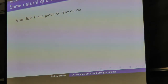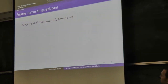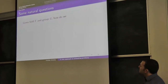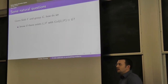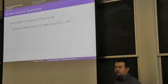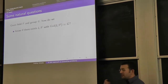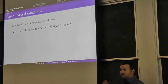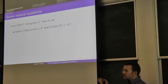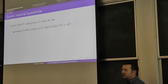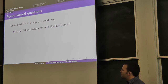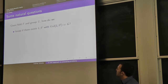There are a lot of very natural questions you can ask once you have the basics of Galois theory. First: given a field F and group G, can you find an extension of F whose Galois group is G? This is called the inverse Galois problem, and in general it's very, very difficult. For some specific fields F or specific groups G there are satisfactory answers, but in general it can be quite difficult.